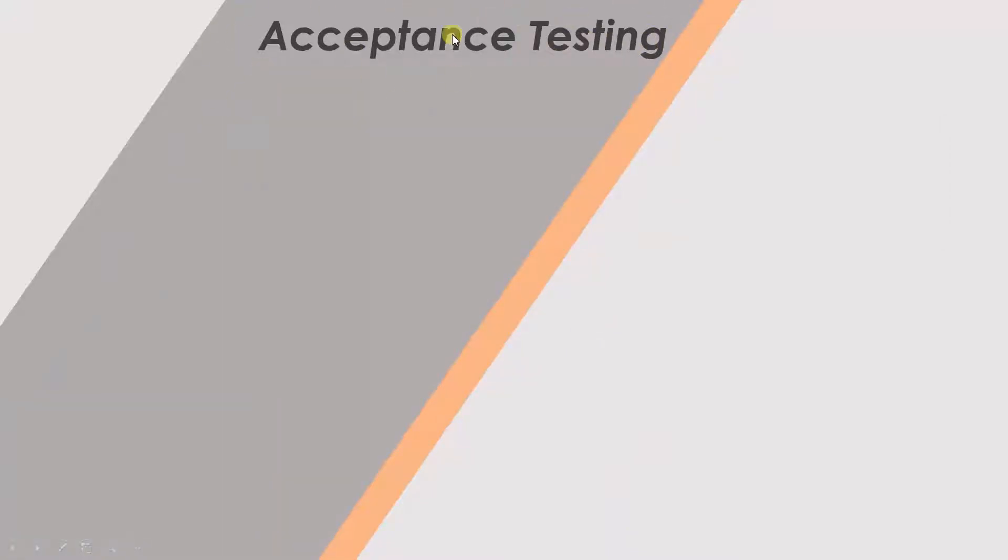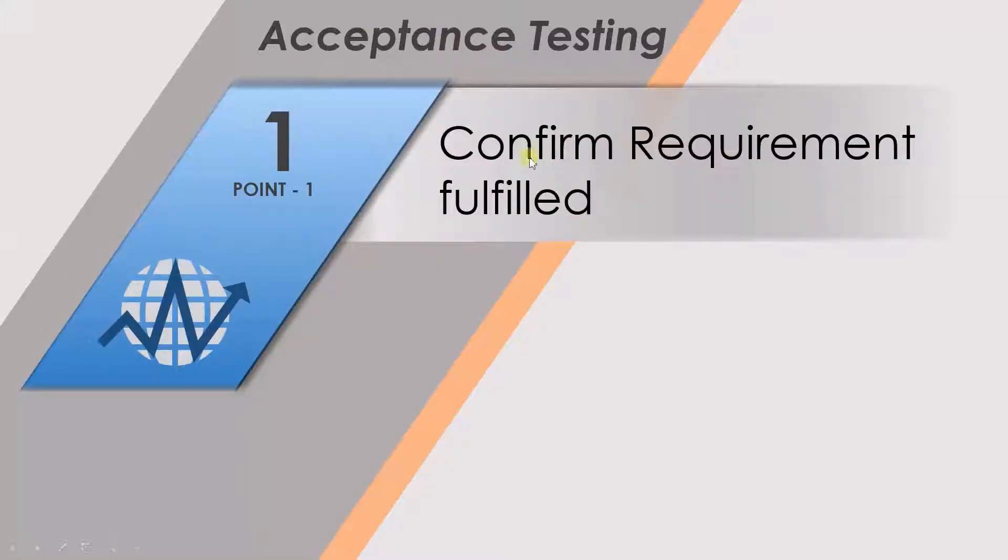In acceptance testing, we try to confirm whether the requirements have been fulfilled. The objective here is not to find the defects. If we do find any, we document them. But the main objective is to confirm that the requirement has been fulfilled.